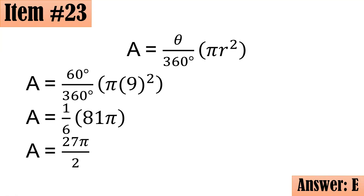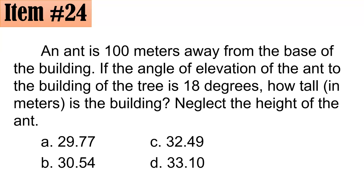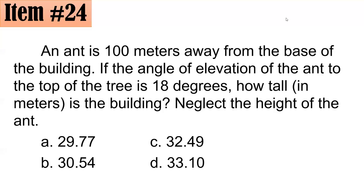Number 24. An ant is 100 meters away from the base of the building. If the angle of elevation of the ant to the top of the tree is 18 degrees, how tall in meters is the building? Neglect the height of the ant. A, 29.77, B, 30.54, C, 32.49, or D, 33.10. Letter C daw. It seems unanimous, which is 32.49.